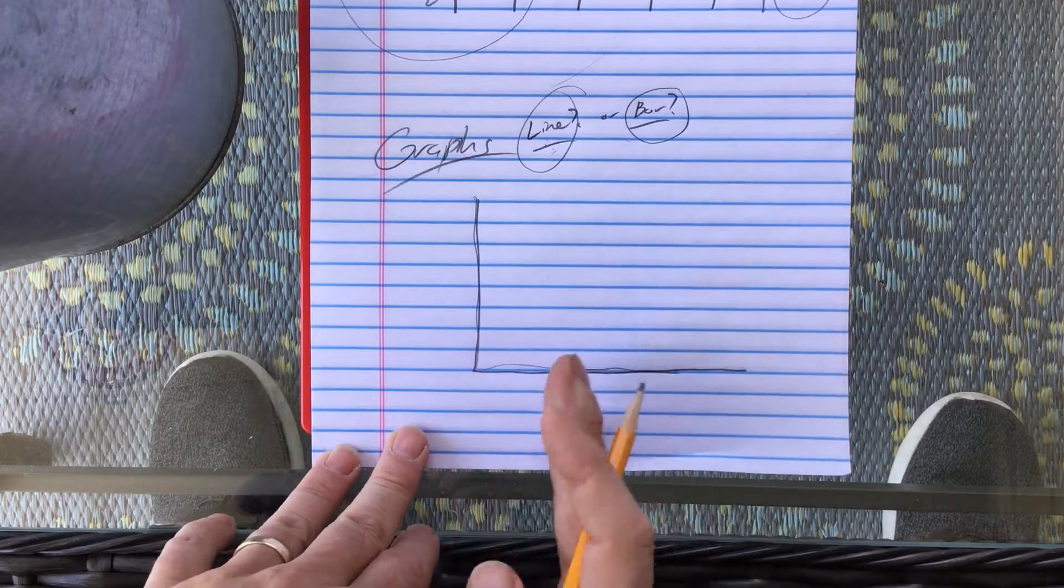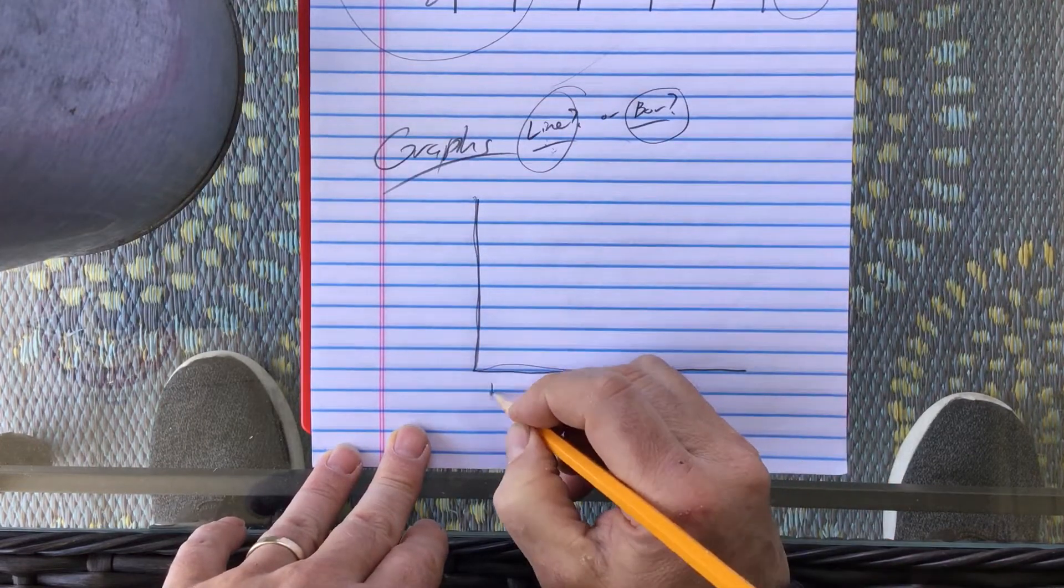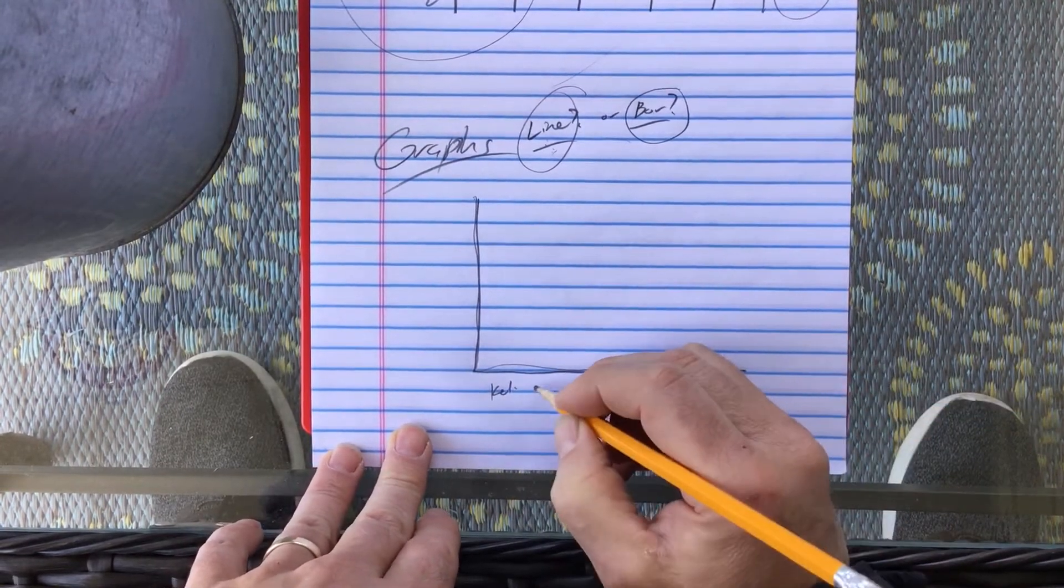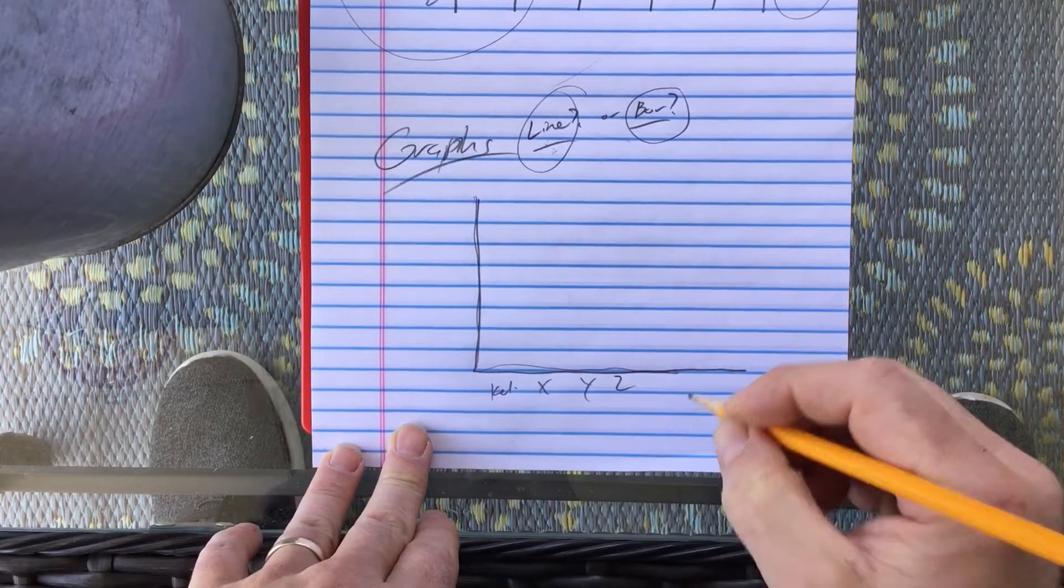See if you can do one on Excel at home and print one out. So in this case, mine might go up and down this way, and here's my Kellogg's, and here's my X, my Y, and my Z brand.